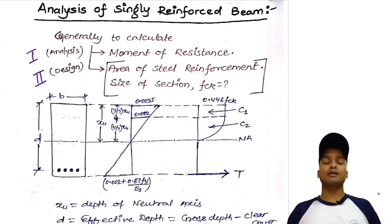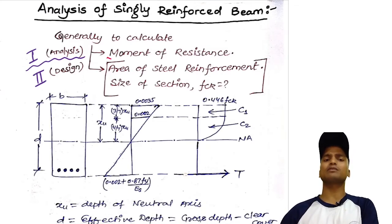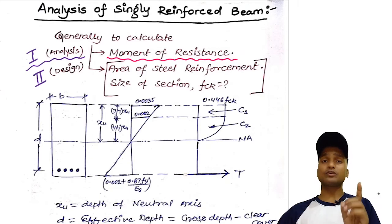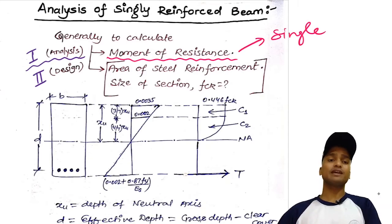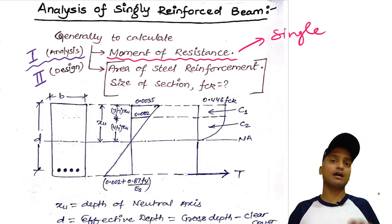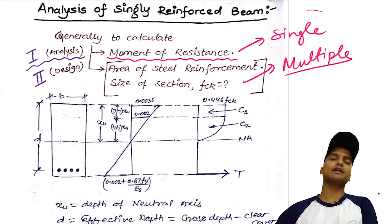In the design problem, we have to find the area of the steel reinforcement, the size of the section, and the material strength. In Type 1, the analysis problem, we generally have to calculate the strength or capacity of the member — that is, we just have to calculate the moment of resistance, which is how much capacity the member has in resisting the bending moment due to flexure. The solution to an analysis problem is a single solution, whereas in design problems we have to calculate the area of cross section and there can be multiple solutions.